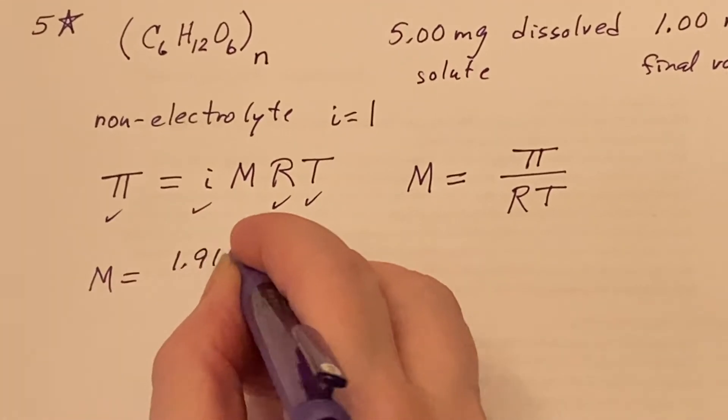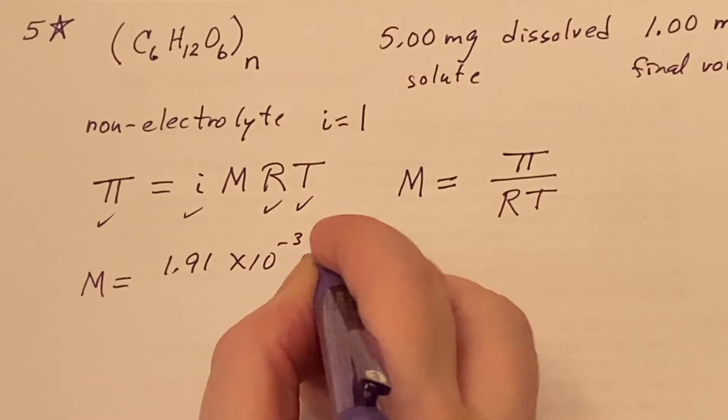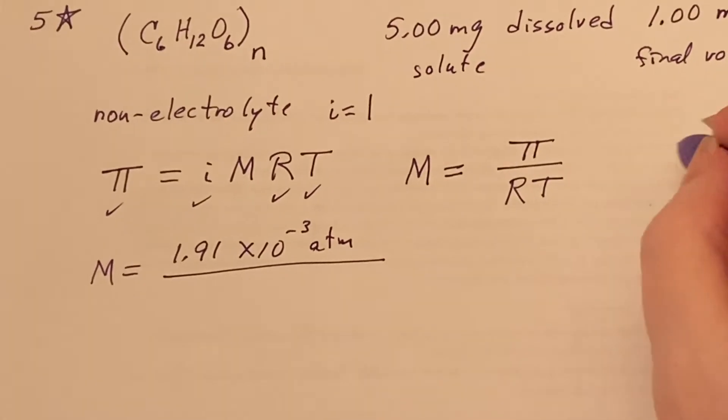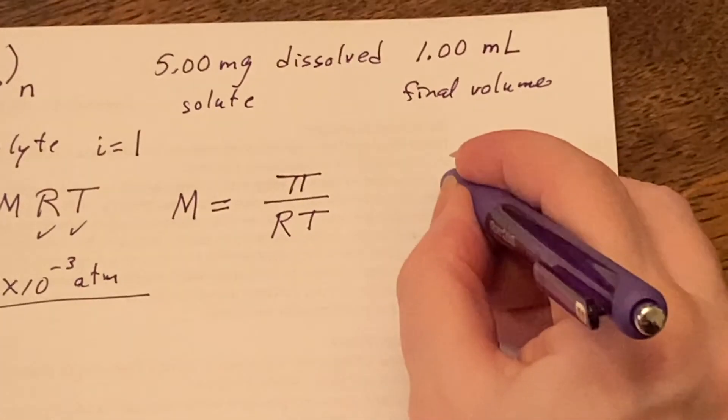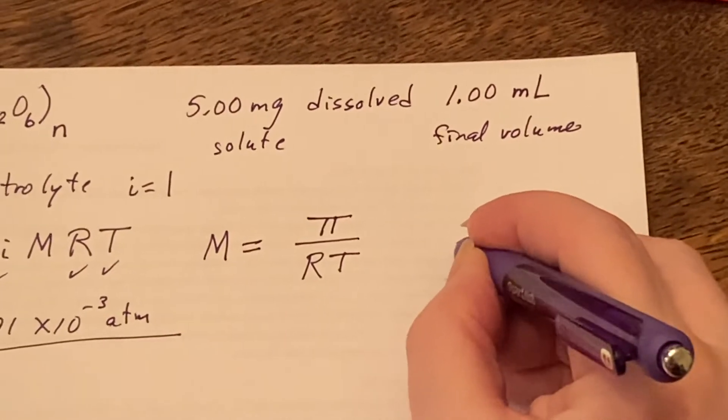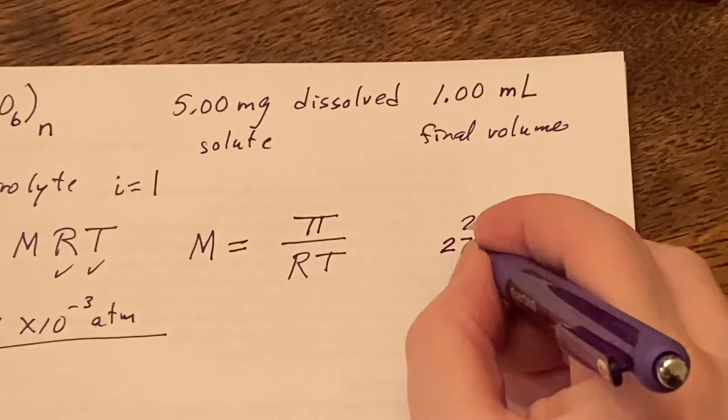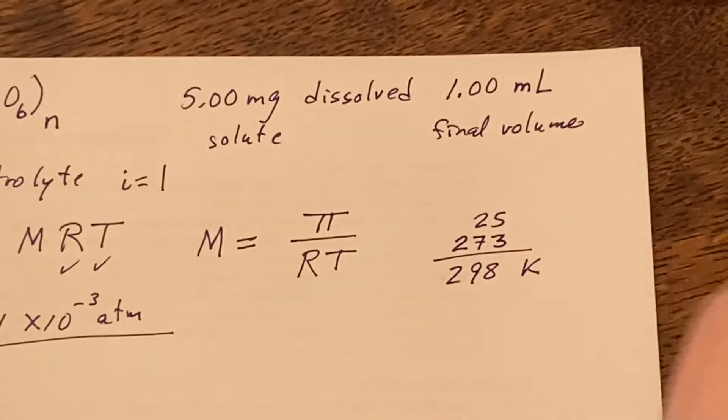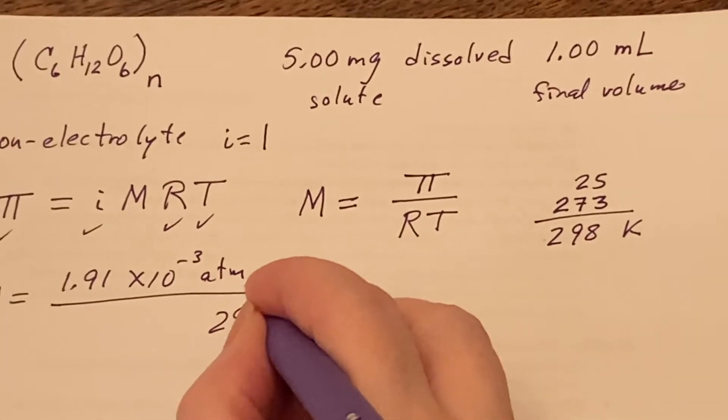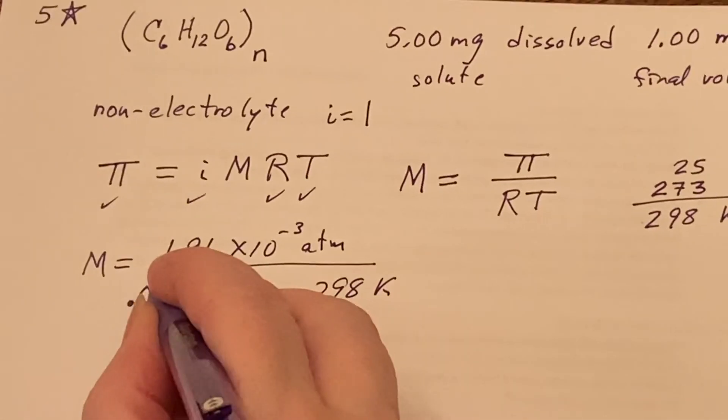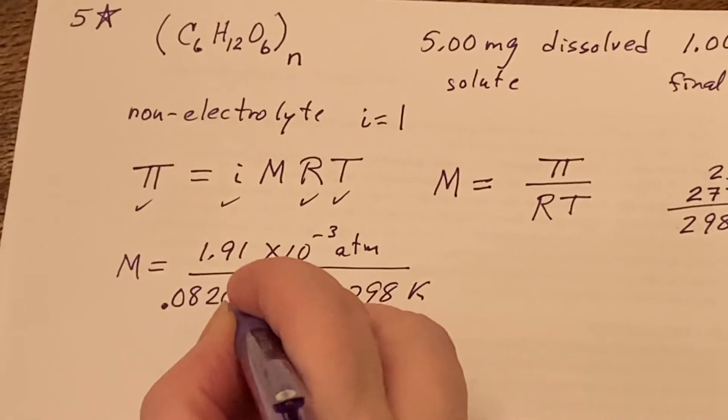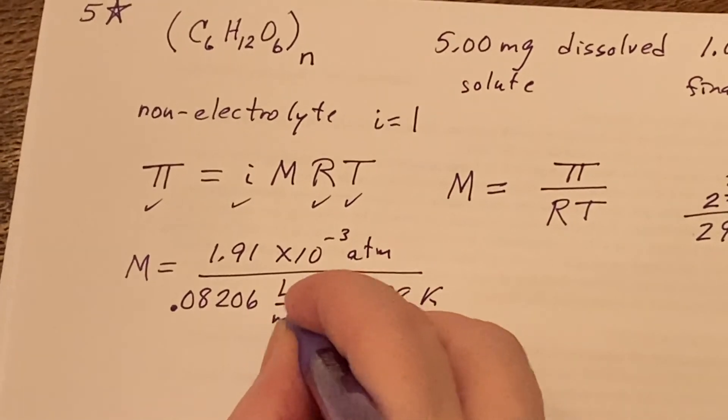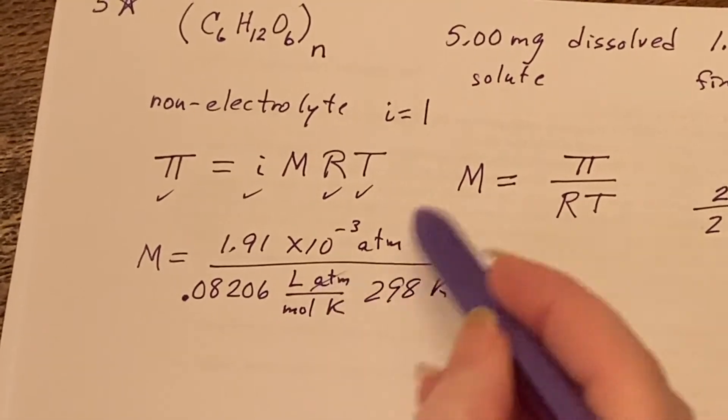If I fill those in, I'll be able to figure out what the molarity is. They told me it was 1.91 × 10^-3 atmospheres. They have an R here and they have a T. Oh, T - T needs to be in kelvin. I know that they said it was 25 degrees Celsius, so I will add the usual 273 to that to turn it into kelvin. So it's 298 kelvin.